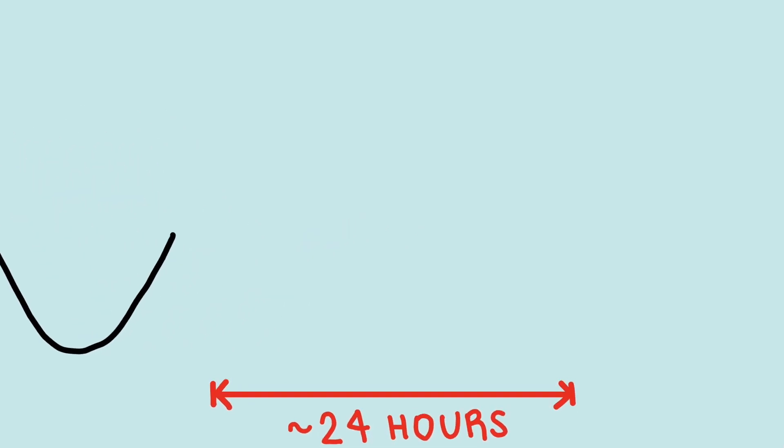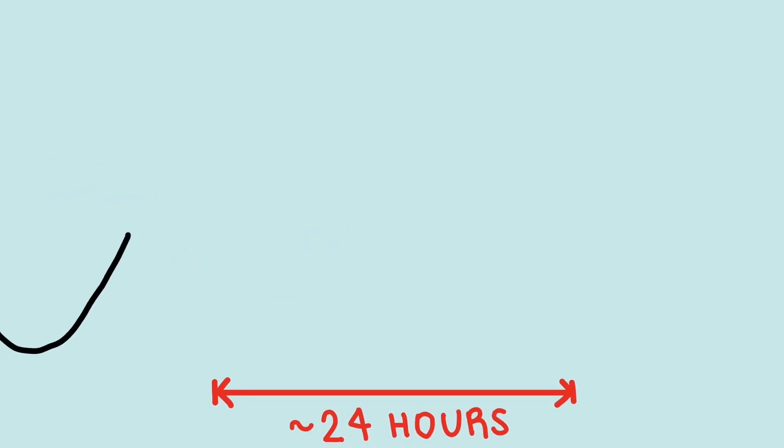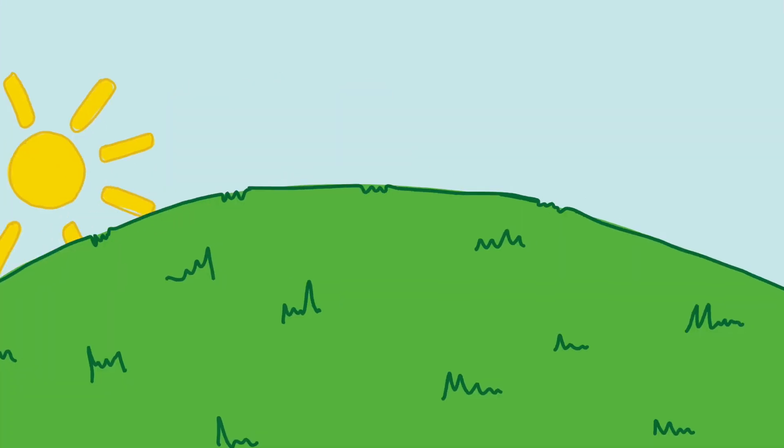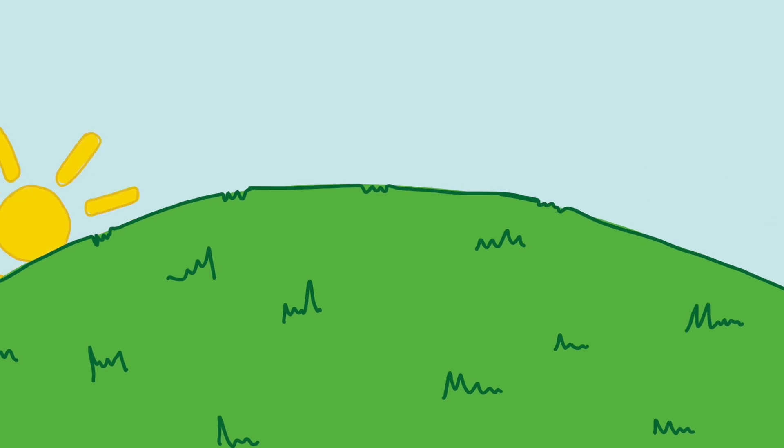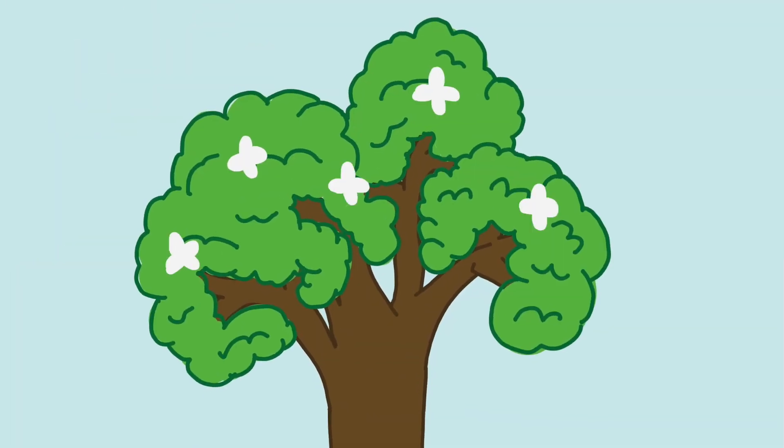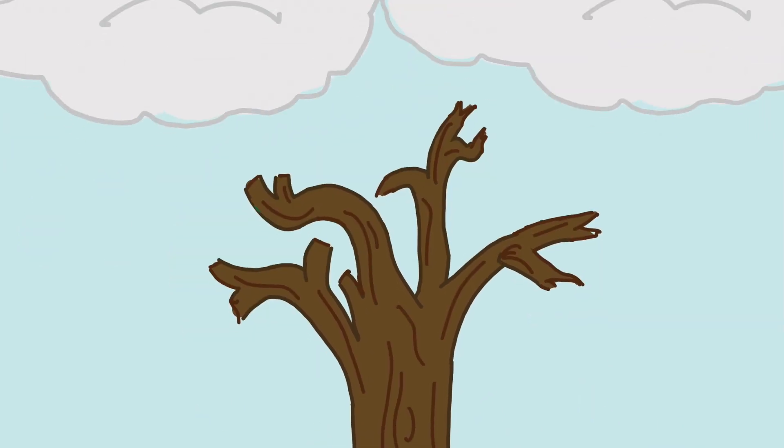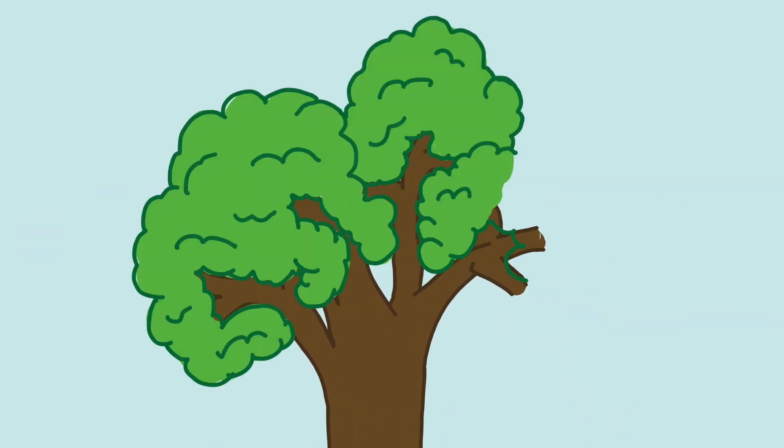Using different external signals, the circadian rhythm can be reset so it fits the local time of the environment. The main signal of local time is light. Changes in light intensity can not only give information on time of day but also time of year. But how are these changes in light communicated to the body's clock?